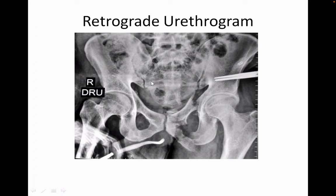They're not referred to as suprapubic and infrapubic. They're referred to as superior and inferior, or horizontal and vertical. Superior and inferior pubic rami fracture. There is contrast seen in the anterior urethra, with the well-distended anterior urethra up to the proximal bulbar urethra with coning of the contrast seen. The contrast is not seen entering the prostatic urethra or the bladder.